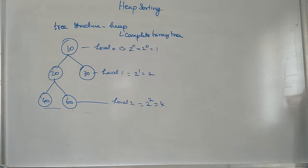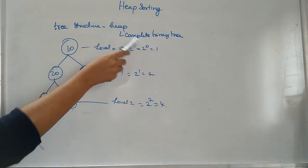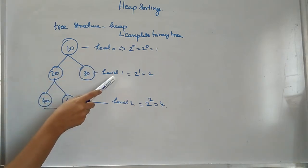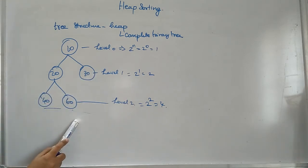A binary tree is said to be a complete binary tree if it is having the maximum number of nodes in all the levels except the last level.